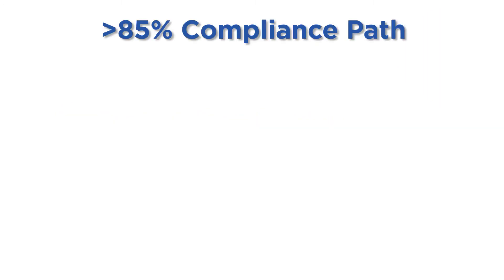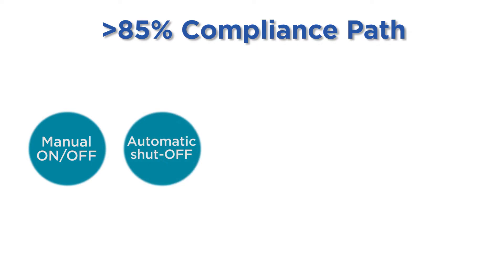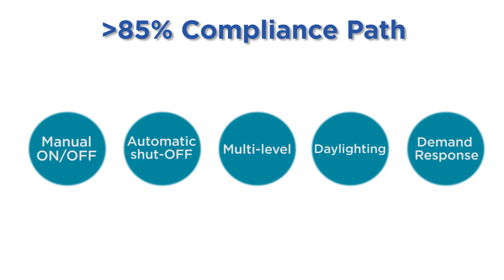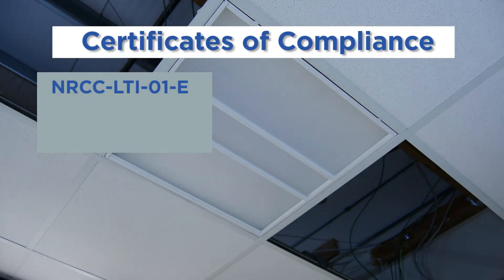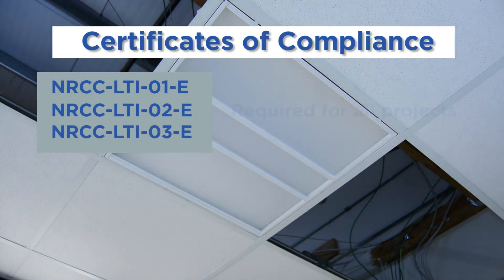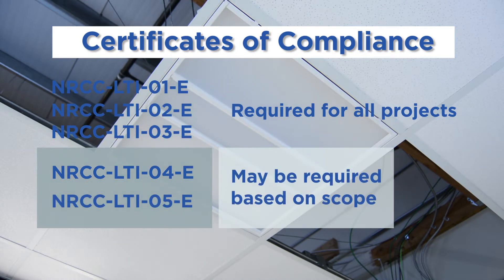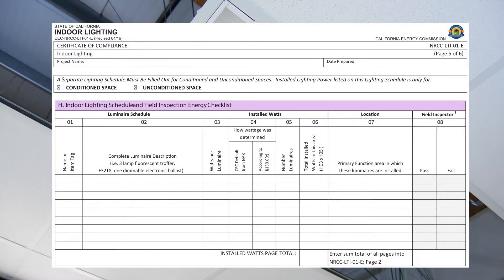Projects using this compliance pathway must include manual on-off controls, automatic shutoff controls, multi-level controls, daylighting controls, and demand response controls, if applicable. Therefore, several compliance forms are needed. Fill out certificate of compliance documents NRCC-LTI-01, LTI-02, and LTI-03 for all projects. LTI-04 and LTI-05 may be required depending on the project scope. Use NRCC-LTI-01 Table H to record information on the replacement luminaires, newly installed luminaires, altered luminaires, and luminaires with component modifications.